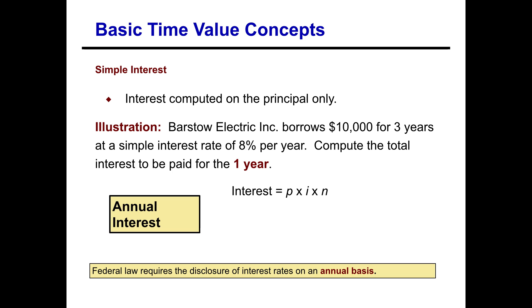Using this illustration, Barstow Electric Incorporated borrows ten thousand dollars for three years at a simple interest rate of eight percent per year. We need to compute the total interest to be paid for year one. Remember your computation for interest is principal times rate times time, so we take ten thousand dollars times eight percent times one period. Keep in mind that interest rates are given on an annual basis, so for year one the interest is eight hundred dollars.